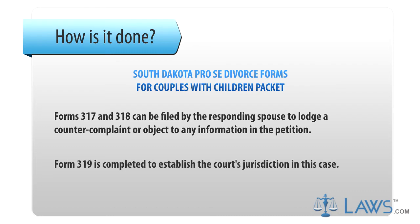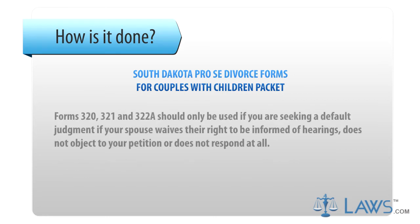Step 5: Form 319 is completed to establish the court's jurisdiction in this case. Step 6: Forms 320, 321, and 322A should only be used if you are seeking a default judgment — if your spouse waives their right to be informed of hearings, does not object to your petition, or does not respond at all.